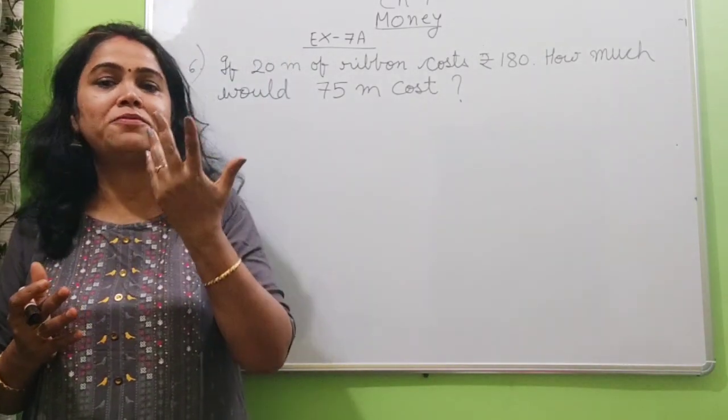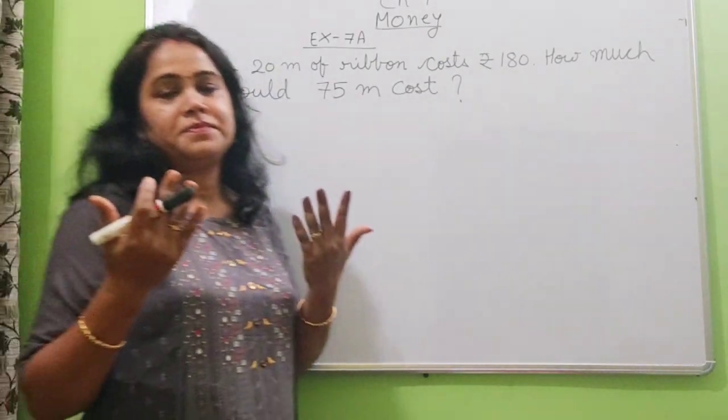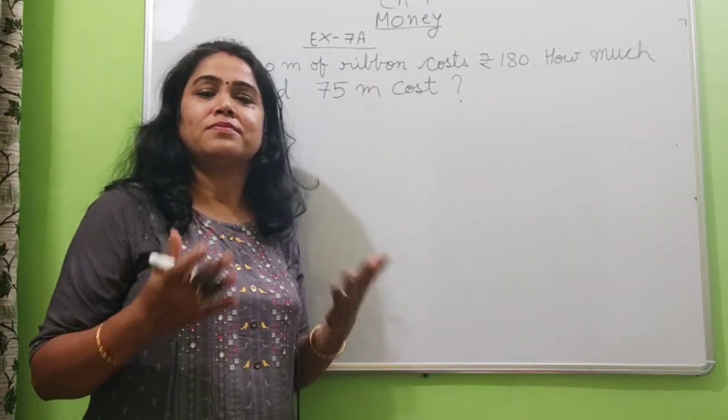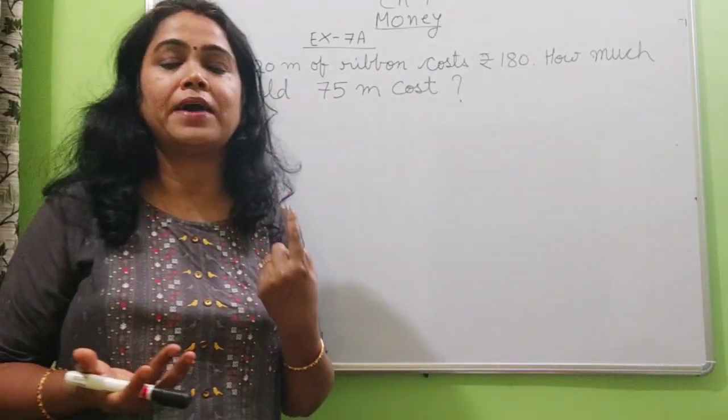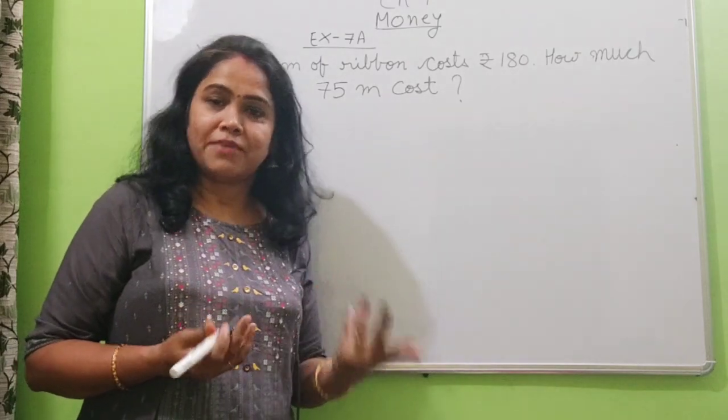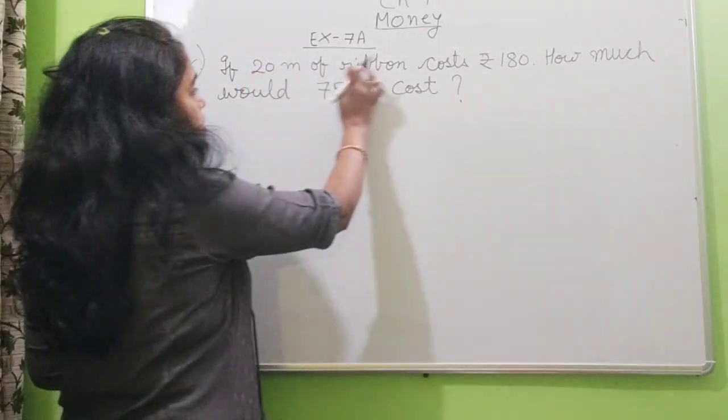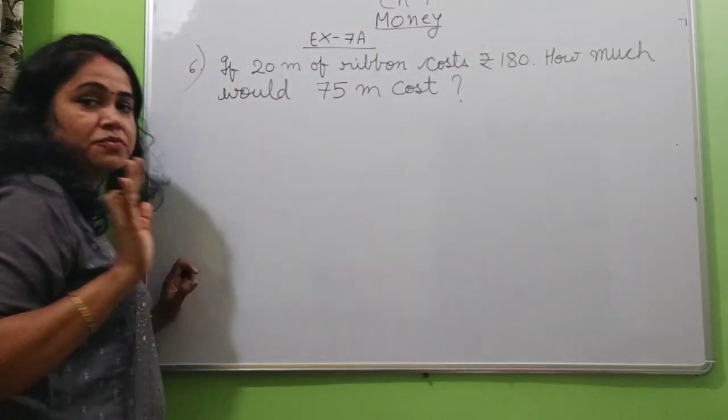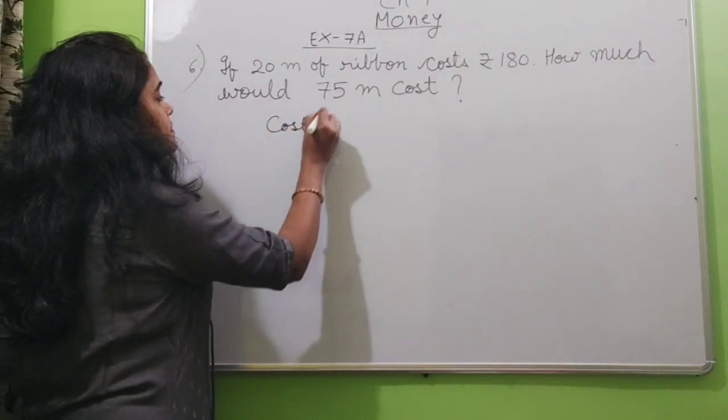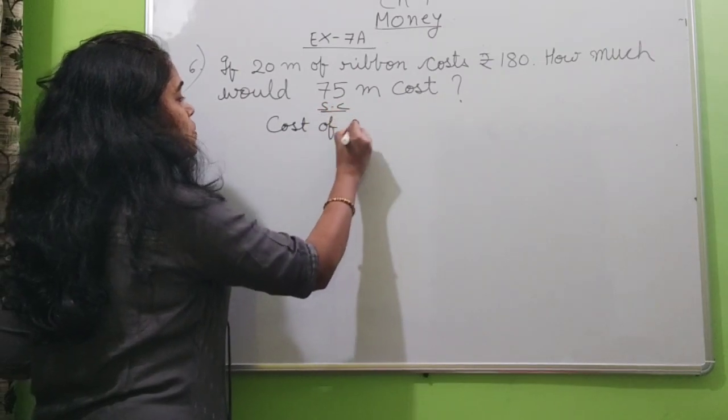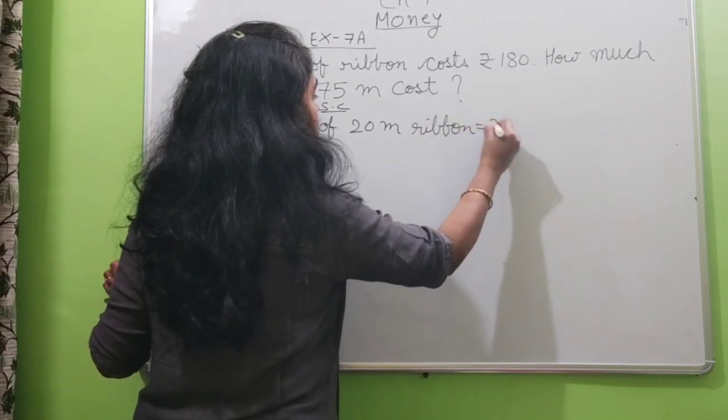If price of 1 chocolate is 5 rupees, 3 chocolate will be 5 into 3, 15. 4 chocolate will be 5 into 4, 20. Like this, we can multiply and find. And if cost of many chocolate is given and we have to find for 1, then we divide. That in unitary method just now I have explained. So here first you try, 20 meter of ribbon cost is given. Cost of 20 meter ribbon is given. So you will write cost of 20 meter ribbon is equal to rupees 180.